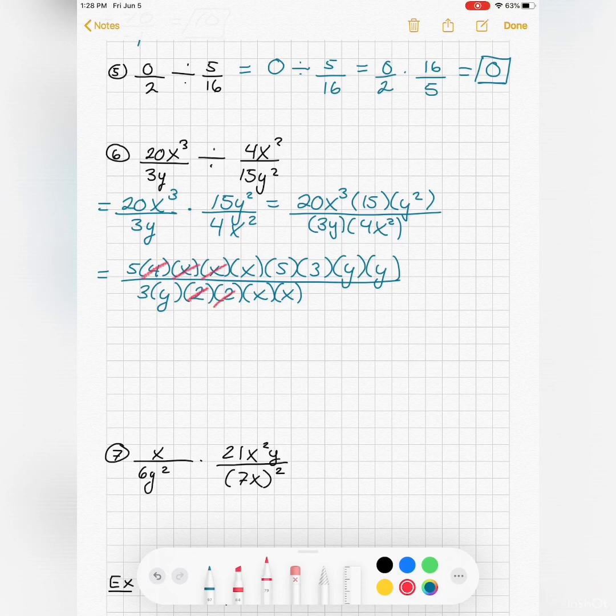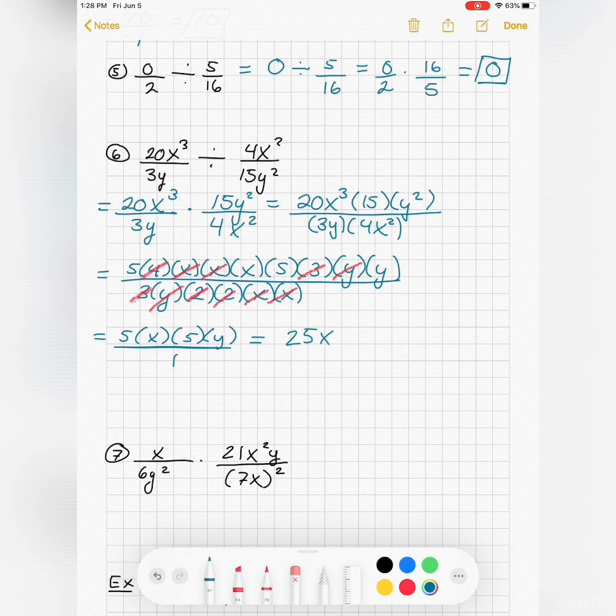What can I cancel? Those, two of those, one of those and one of those. So what am I left with? A 5, an x, another 5, and a y over a 1. Well that comes up nice. 25xy.